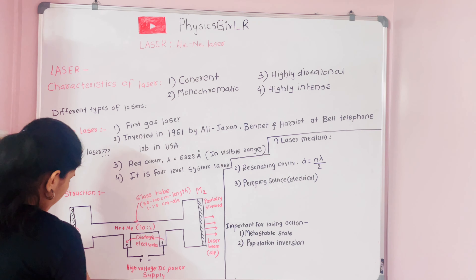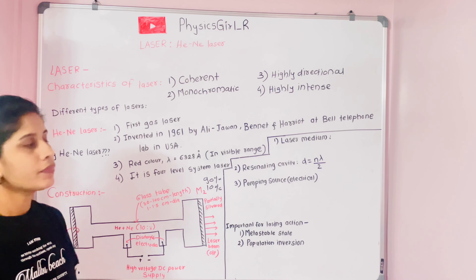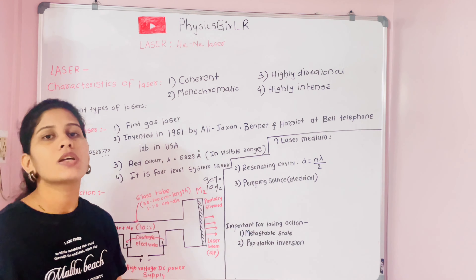This optical cavity forms a resonating pattern, providing a path for photons to move back and forth. The pumping source — the high-voltage DC power supply — acts as the electrical pumping. The glass tube is connected to discharge electrodes: one positive and one negative terminal maintained at high voltage.